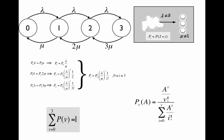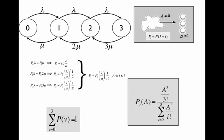The probability that a call is blocked will then be the probability that the system is in state 3. And this is just what Erlang did.